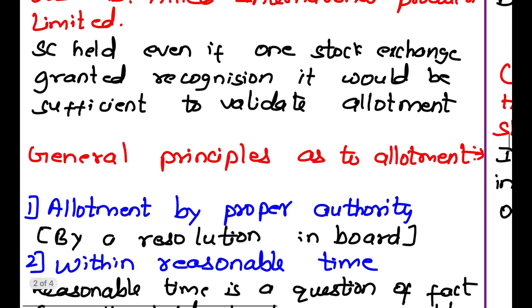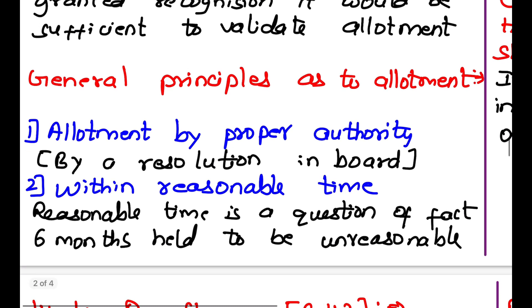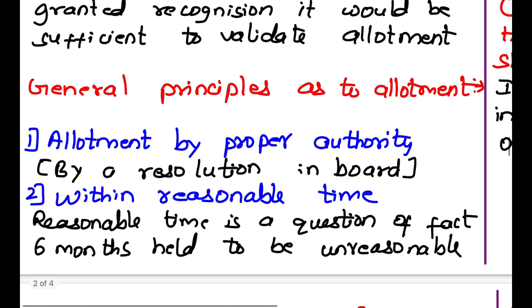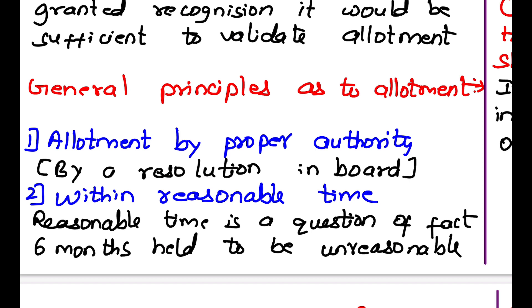General principles as to allotment. First: allotment by proper authority. Only a proper authority can do allotment. The proper authority is by resolution in a board meeting — the board of directors. By passing a resolution in a board of directors meeting, they can allot shares.